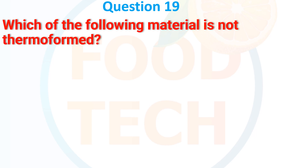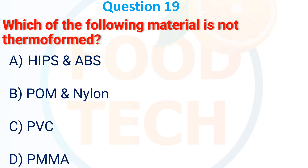Which of the following materials is not thermoformed? (a) HIPS and ABS, (b) PMO and Nylon, (c) PVC, (d) PMMA. The answer is (b) PMO and Nylon.